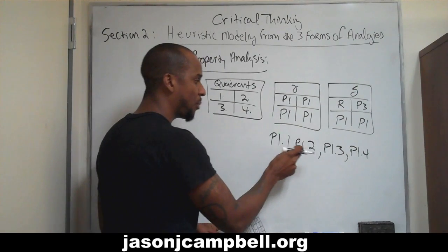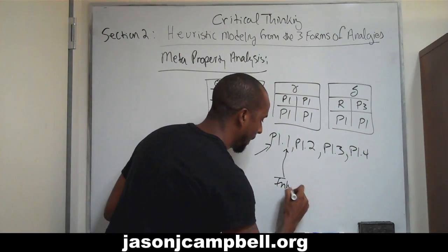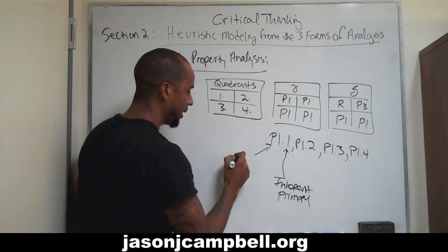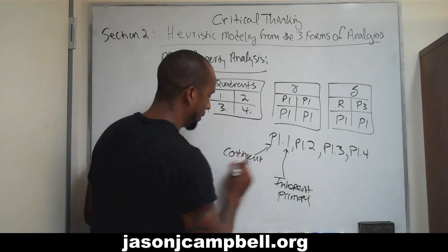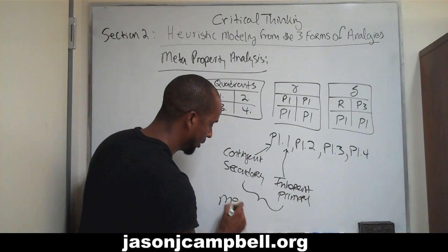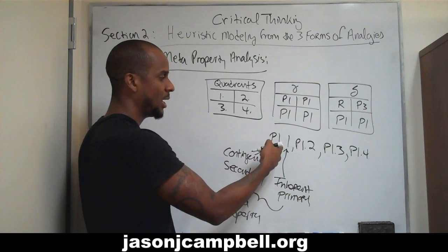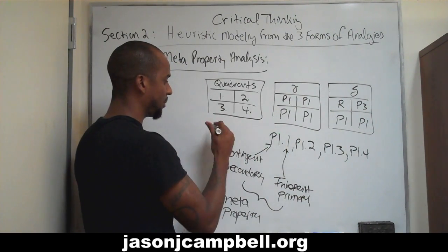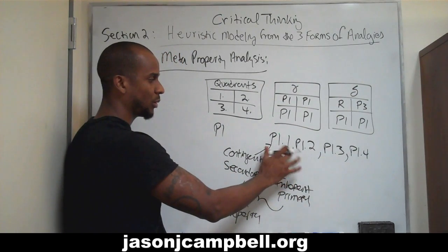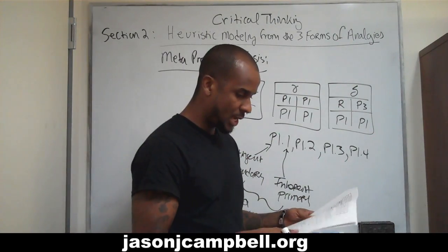So we have a property on property. This is the inherent, or primary, property — quadrant 1 is inherent or primary. Property 2 is contingent, or secondary. They're both properties, so together they create a meta-property. This is a meta-property — obviously a deeper level of analogical relational assessment than just P1, because we're talking about P1.1, P1.2, P1.3, P1.4 — deeper analogical relational analysis involving meta-properties.